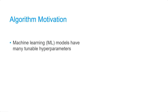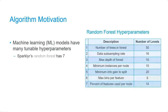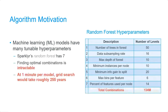Here's a brief example to explain the algorithm motivation. Machine learning models have many tunable hyperparameters. For instance, Sparklyr's random forest has seven, including number of trees in the forest, data subsampling rate, max depth, and so on. We list a typical number of levels for each hyperparameter — a level represents a unique value you'd set for a hyperparameter, such as trying 20, 50, or 100 trees. The total number of combinations is the product of these levels, giving an estimated 134 million different combinations. At one minute per model, grid search would take roughly 255 years — finding an optimal combination is an intractable problem.